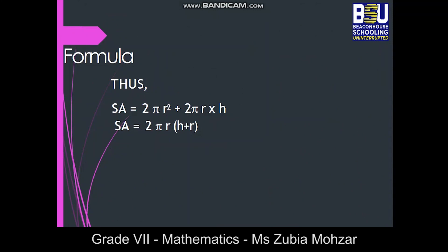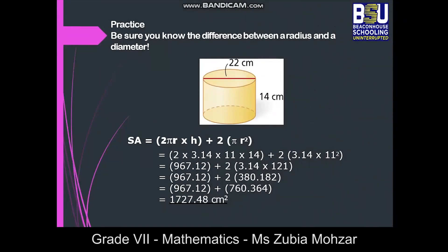Time to practice some questions. First, revise the formula with me: surface area equals 2πr² plus 2πr times height, or we can write 2πr(h + r). For example, you can see a cylinder. Two dimensions are given: 22 cm and 14 cm. The 22 cm represents the diameter, and 14 cm is the height of the cylinder. In the formula, radius is used. Radius is half of diameter, so in this case it will be 11 cm. By substituting the values in the formula, you can easily calculate the surface area of the cylinder.